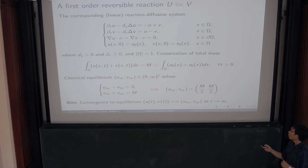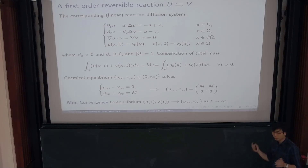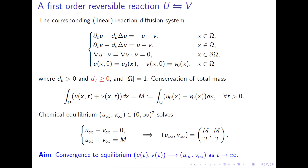For this system, because of this closed reaction with nothing going out and nothing going in, you have conservation of total mass. Basically, you just add up the equations, the reaction disappears, you integrate in space, and because of the homogeneous Neumann boundary condition, the diffusion disappears. So basically, the sum of the mass is always a constant, equal to the initial total mass.